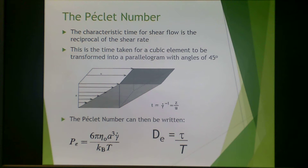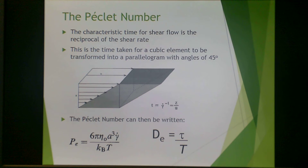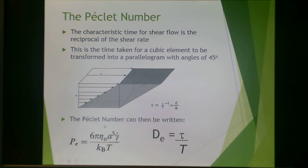The characteristic time for the Péclet number in shear flow is the reciprocal of the shear rate, taken for a cubic element to be transformed into a parallelogram with angles of 45 degrees. With that, the Péclet number can be written as shown. This term is analogous to tau in the Deborah number.